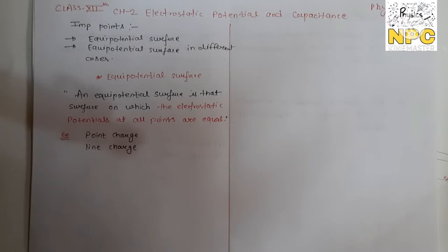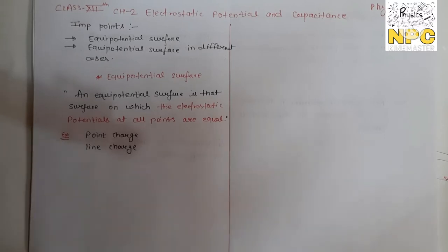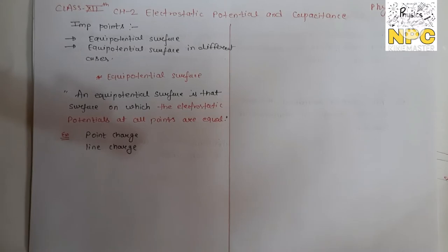If we talk about the proper definition of an equipotential surface: an equipotential surface is that surface on which the electrostatic potential at every point — at all points of the surface — is equal, or we can say the same. An equipotential surface does not have one particular shape; it can be different depending on the charge configuration.